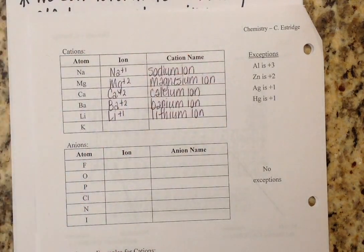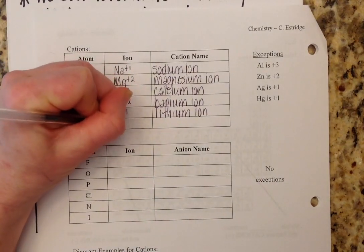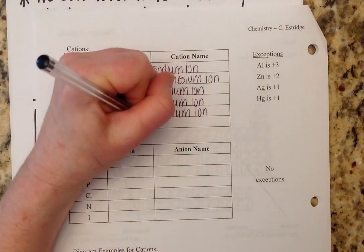And one more, just because if five are good, six is even better. Potassium has a plus one charge, and it becomes the potassium ion.